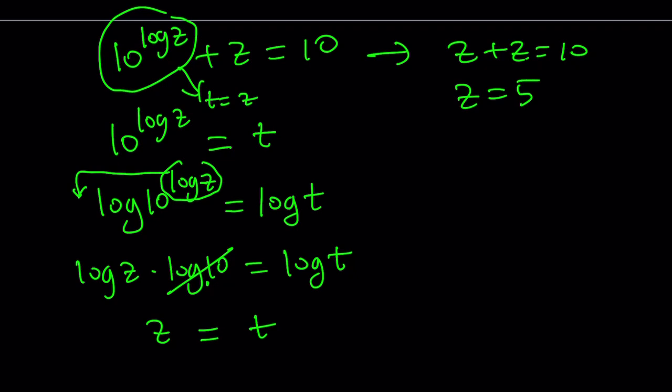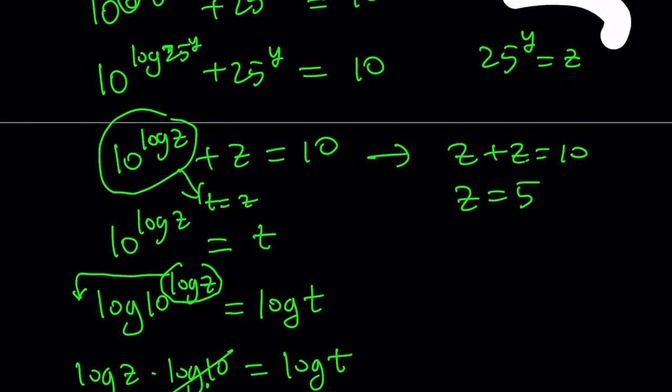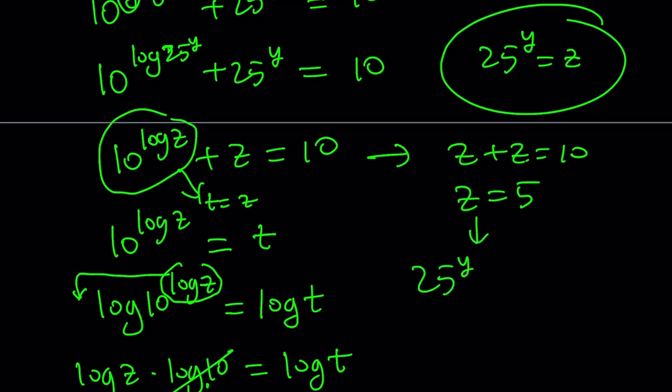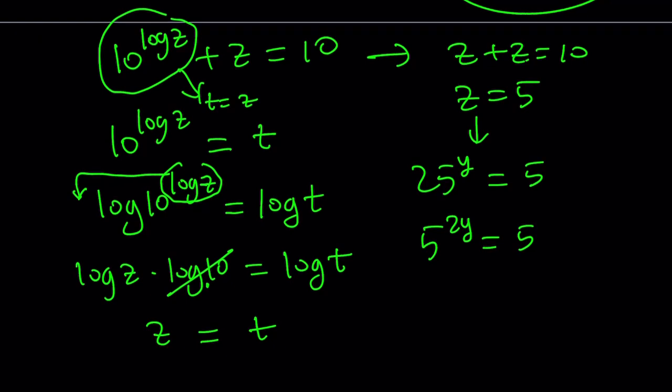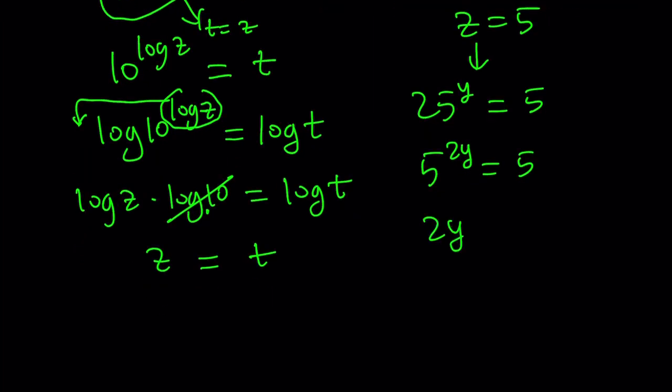Z equals 5. But what is z? Z is 25 to the power y. So I can write it as 25 to the power y is equal to z, which is 5. And now 25 is 5 to the second power. So this becomes 5 to the power 2y equals 5. And now here, 2y is equal to 1, and y is equal to 1 half.